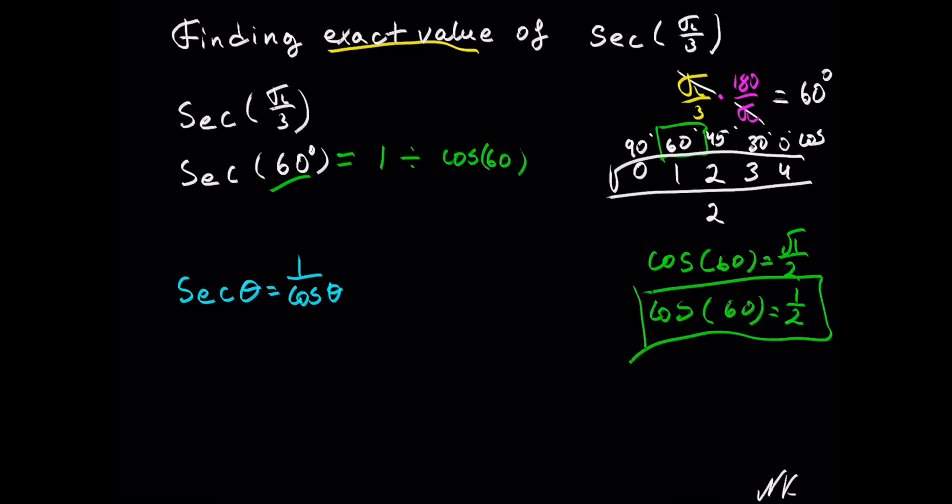If you have the special values memorized, you do not need to look up the reference table. So now we can calculate secant of 60 degrees, which is equal to 1 divided by 1 half.